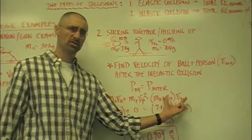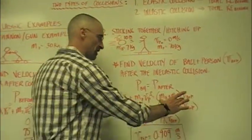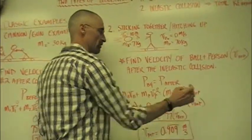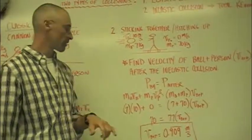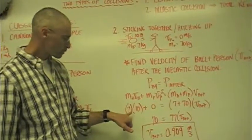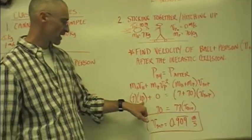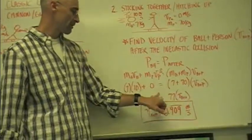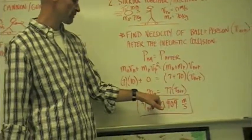Does that make sense to everybody? Since they're stuck together, we're going to have to treat them as one mass, and then they have one velocity. So, if we look at that, we go mass of seven times ten, which gives us 70 kilogram meters per second of momentum before the collision.